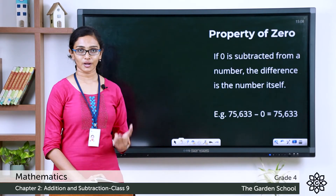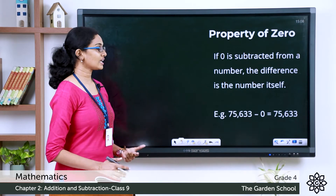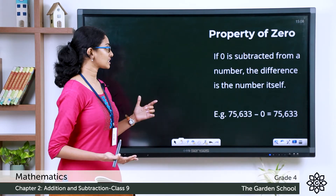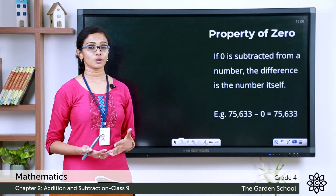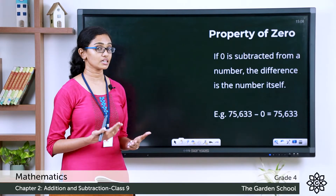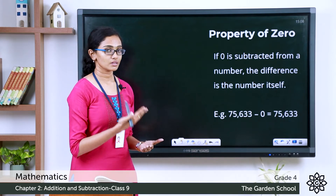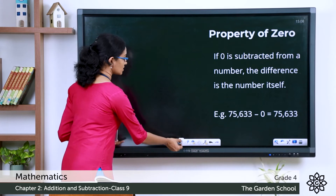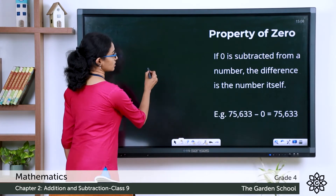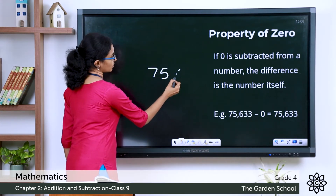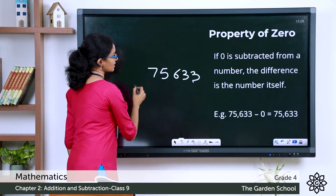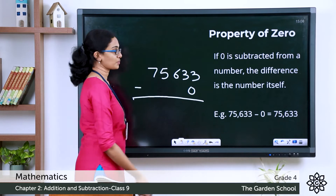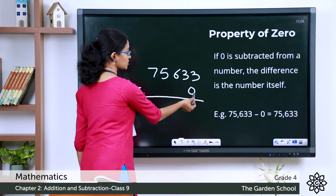Let's see the first property — the property of zero. It says that if 0 is subtracted from a number, the difference is the number itself. When we are actually subtracting 0 from a number, we are not practically subtracting anything from the given number. Let's see that with an example: 75,633 minus 0.